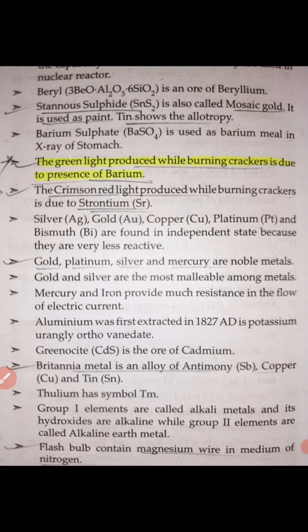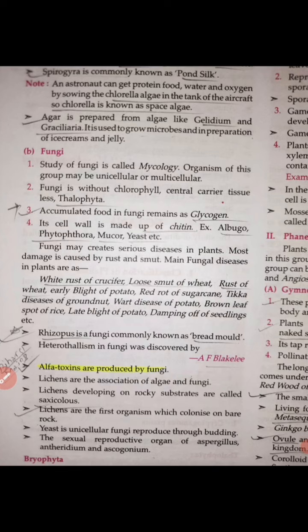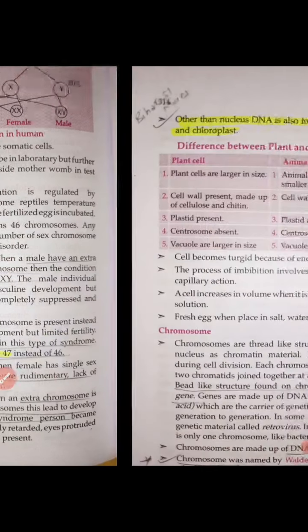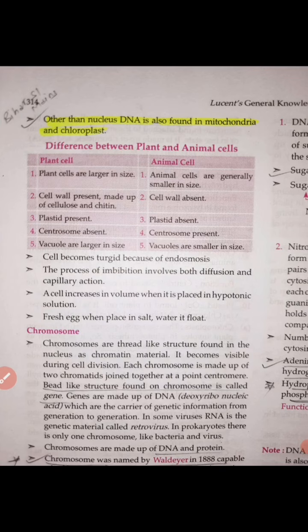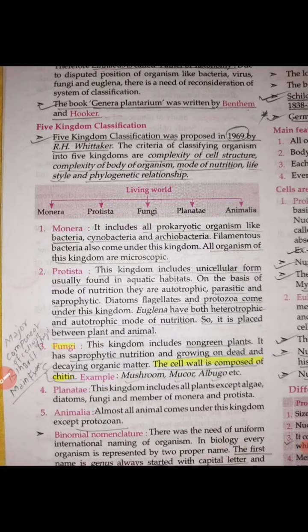The green light produced while burning crackers is due to the presence of barium. A question from 66 BPSC: milk is not considered a complete food due to the lack of vitamin C and iron. A question asks from which organism alpha toxins are produced — alpha toxins are produced by fungi. A question about XXY: when the chromosome count is 47, what is this genetic disorder? It is known as Klinefelter syndrome. A question about extracellular DNA found in mitochondria and chloroplasts. Another question: the cell wall of fungi is made of chitin.